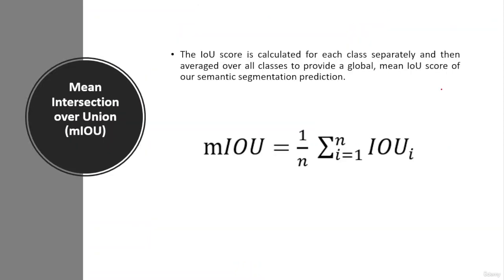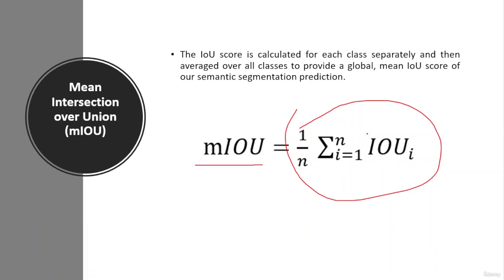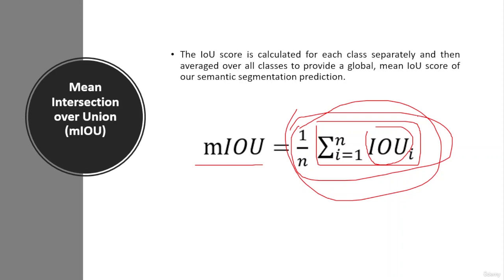The next metric is mean intersection over union, used to calculate the performance of the segmentation model. To calculate the mean intersection over union, first you need to calculate the intersection over union for each class, and then average over all classes to provide a global mean intersection over union score for the semantic segmentation predictions. In the formula, mean intersection over union is equal to the average of the intersection over union for all classes, where i equals 1 to n and n represents the number of classes. It is the sum of the intersection over union for all classes divided by the total number of classes, 1 by n.